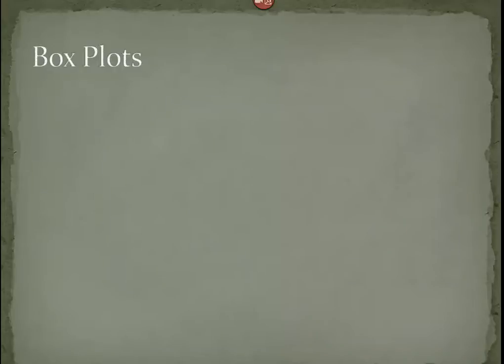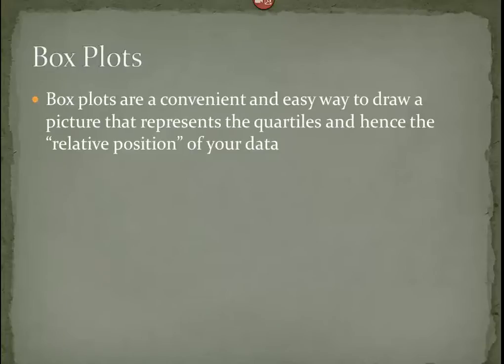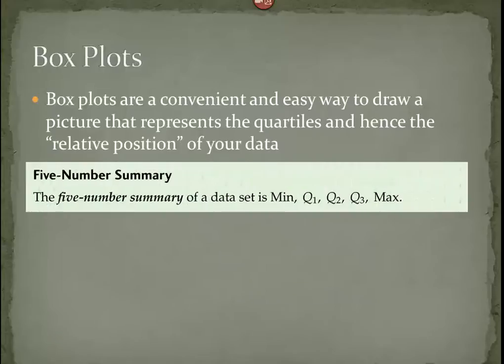Now, just knowing those numbers is really not very helpful. We really need a picture to be able to display how this data is spread out over the real number line. This is called a box plot. Box plots are a convenient way for us to draw a picture that represents the quartiles, and hence, where our data is spread across the number line. To do this, we use our quartiles, and then we throw in two other numbers. Those two numbers that we throw in are the minimum and the maximum numbers of the data set.